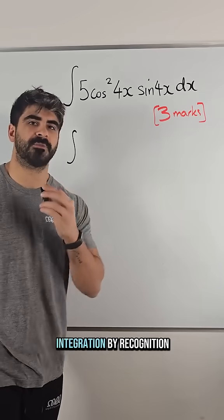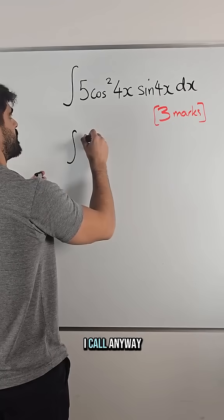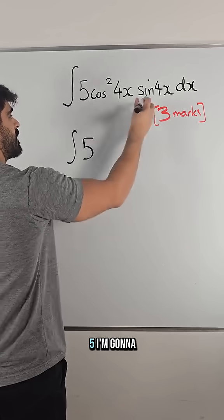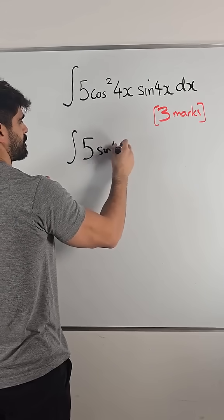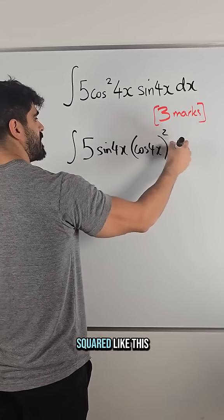This is just integration by recognition, which I use the guess method, well that's how I call it anyway. So you've got 5, I'm going to write sin4x, and then I'm going to write cos4x squared like this.